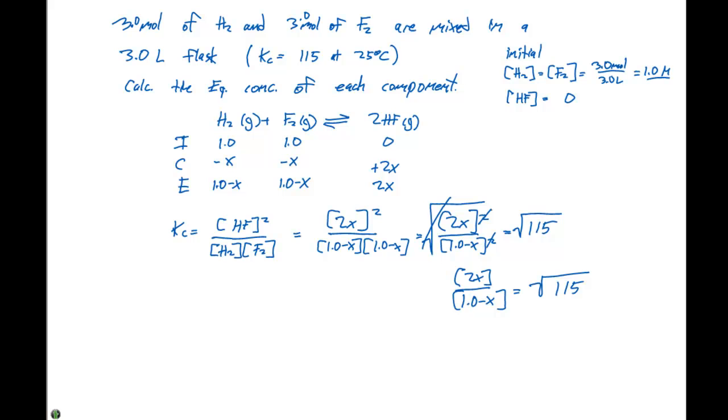This will simplify things quite a bit, because we're going to have 2x equal to the square root of 115 times 1 minus x. Or 2x equals the square root of 115 times x—sorry, minus the square root of 115 times x plus the square root of 115.